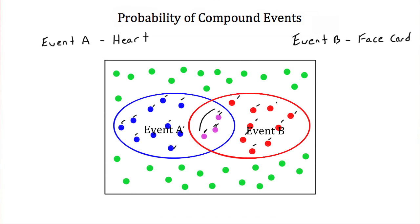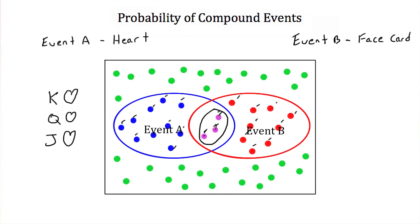In the middle here, these purple dots are the cards that satisfy both event A and event B. These three dots represent the three cards that are both hearts and face cards. One of these dots is the king of hearts, another is the queen of hearts, and the last one is the jack of hearts. So the three dots in the intersection of these two ellipses satisfy both event A and event B — they're hearts and they're face cards.